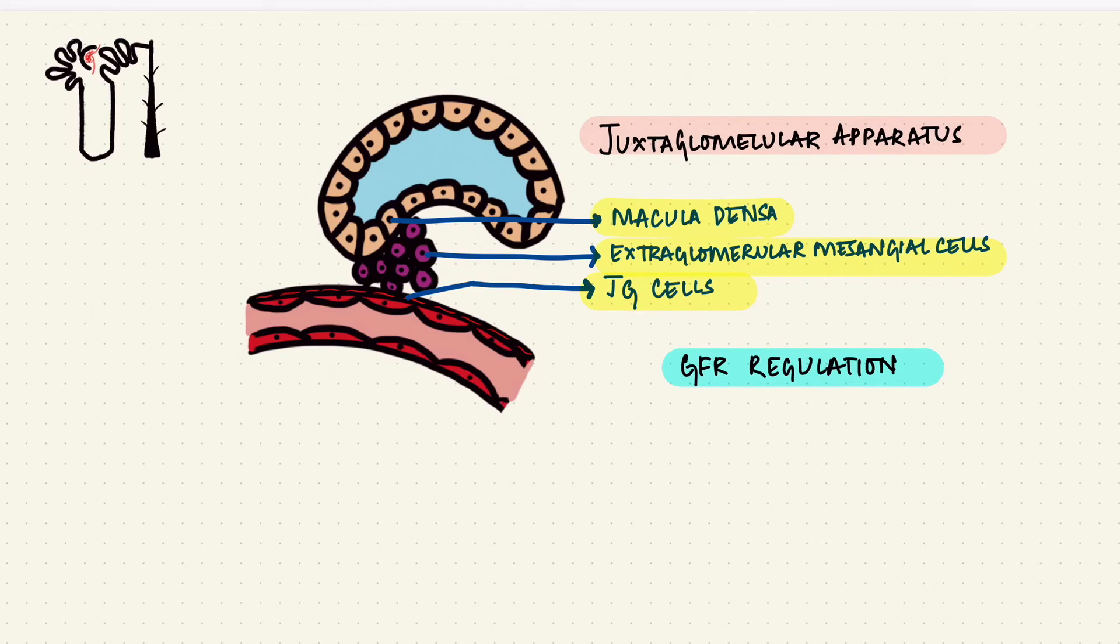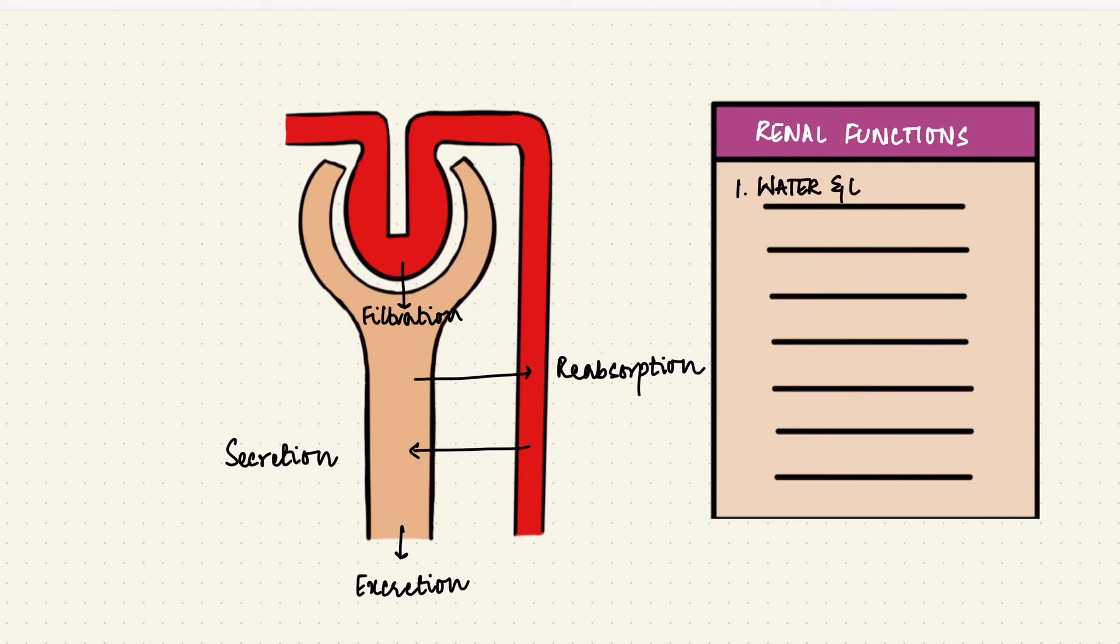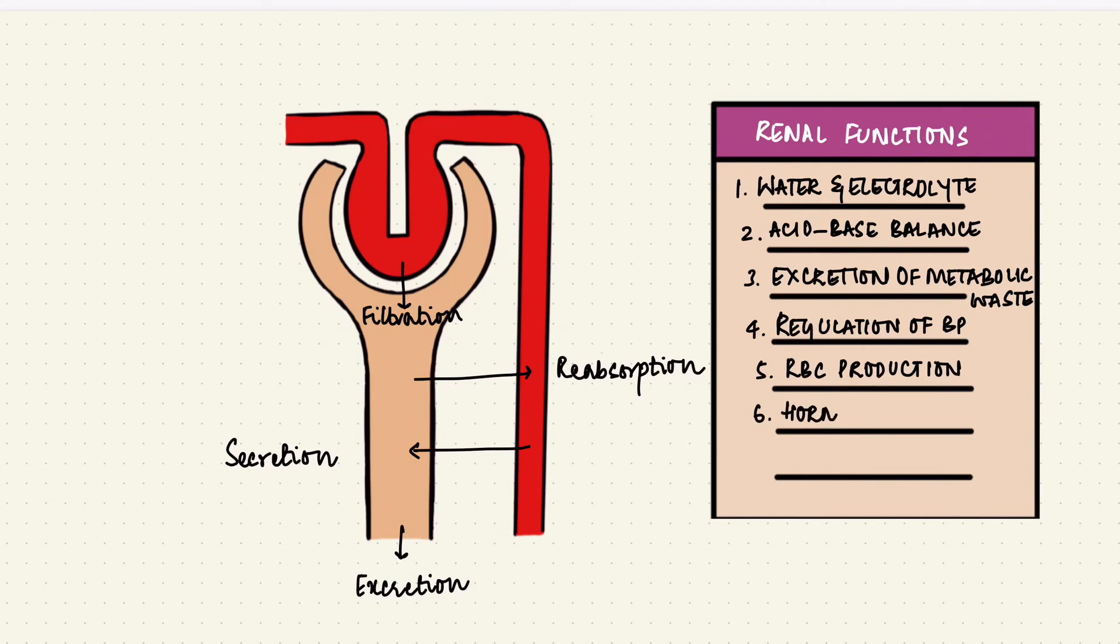So with all these structures, the nephron performs functions of filtration at the glomerulus, reabsorption, secretion at the tubule, and finally excretion. So it maintains the kidneys functions of water and electrolyte balance, acid-base balance, excretion of metabolic waste, in addition to the other functions that the kidney has, like regulation of blood pressure, RBC production, and its hormonal functions.